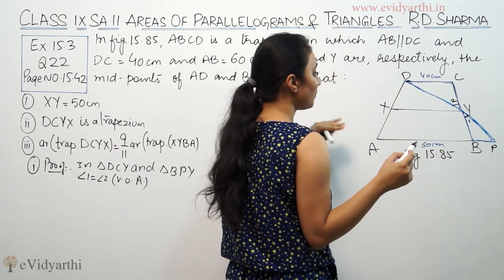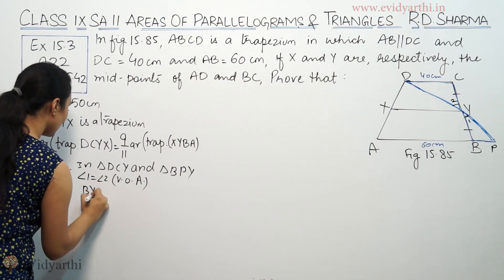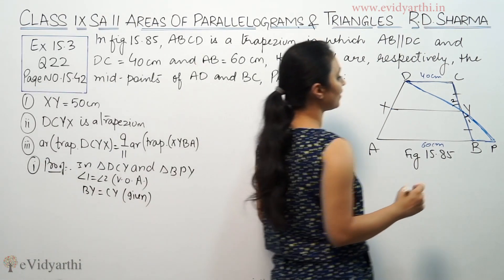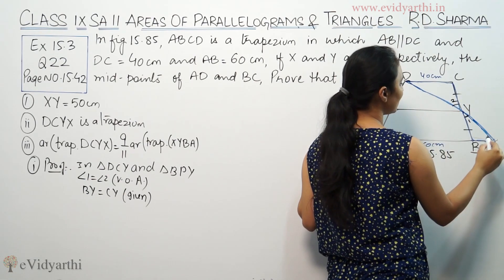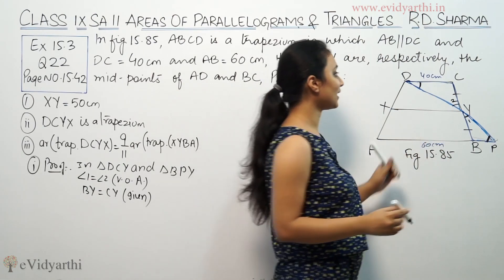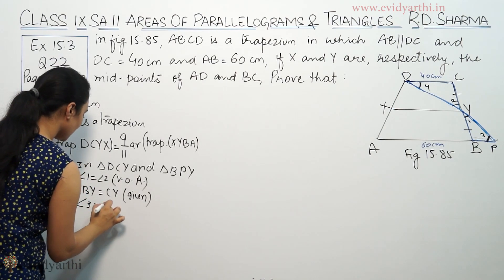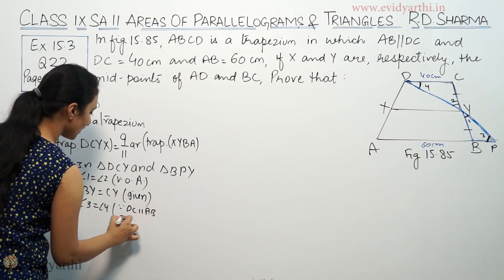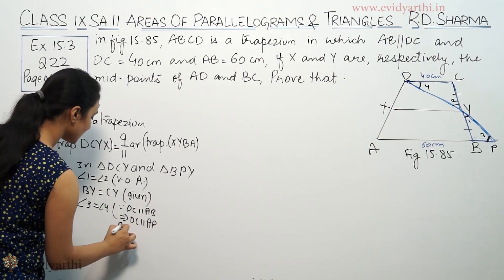Second, we know that Y is the midpoint, which means BY equals CY. So BY equals CY — this is given. And for the angles, because DC is parallel to AP, making a Z-form, angle 3 equals angle 4 as alternate angles. Since BC is parallel to AB, this implies BC will be parallel to AP, so alternate angles are equal.